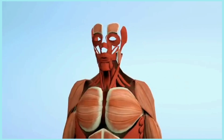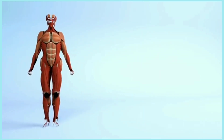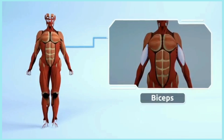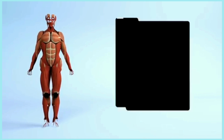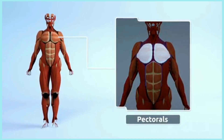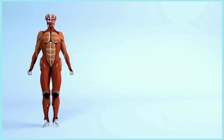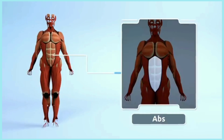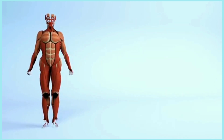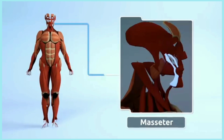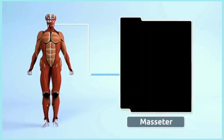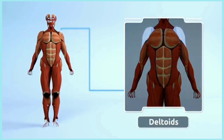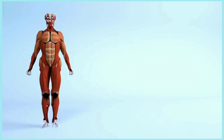We have more than 600 muscles throughout the whole body, like biceps, pectorals, abs, masseter, deltoids, and quadriceps.